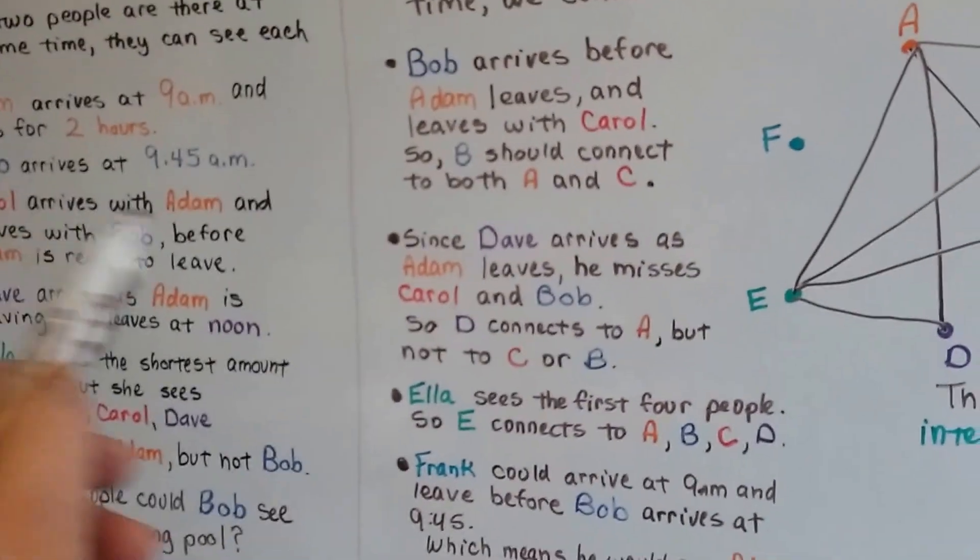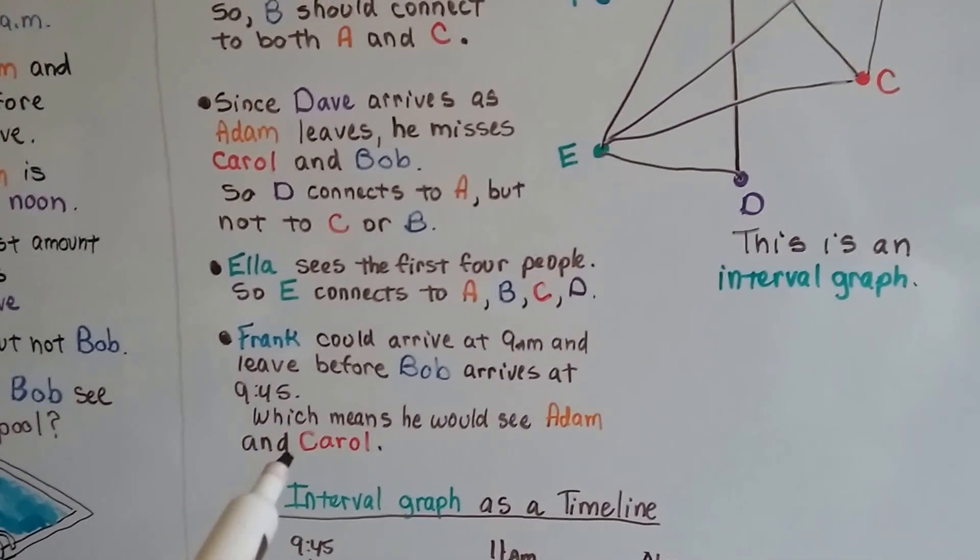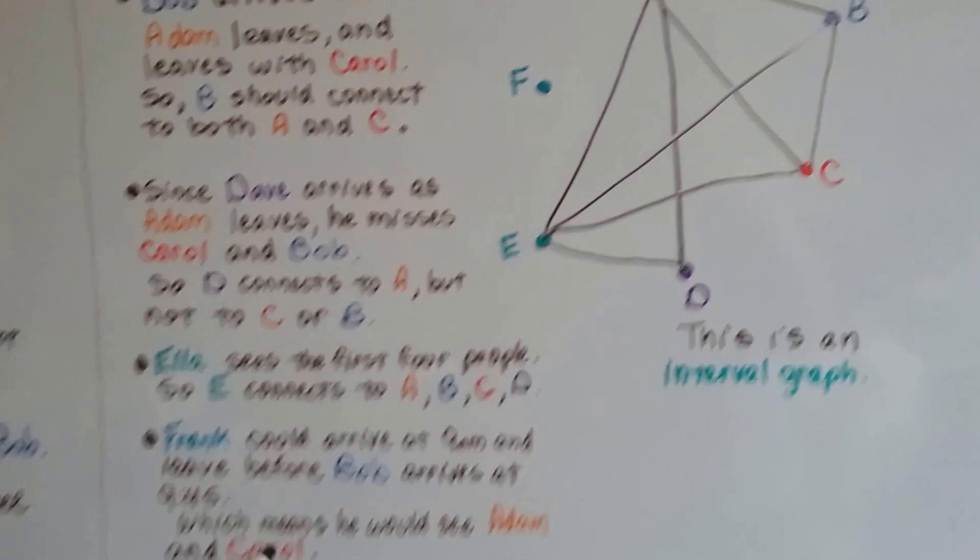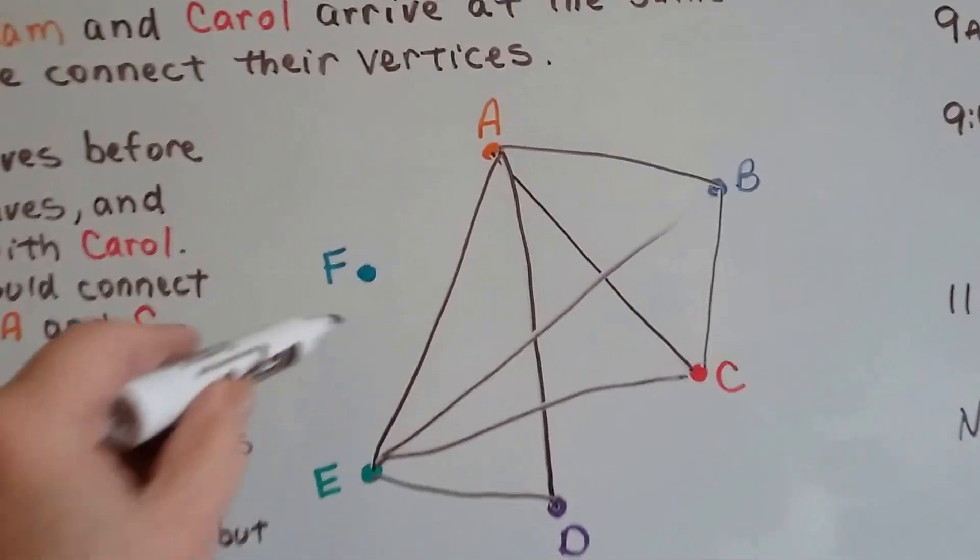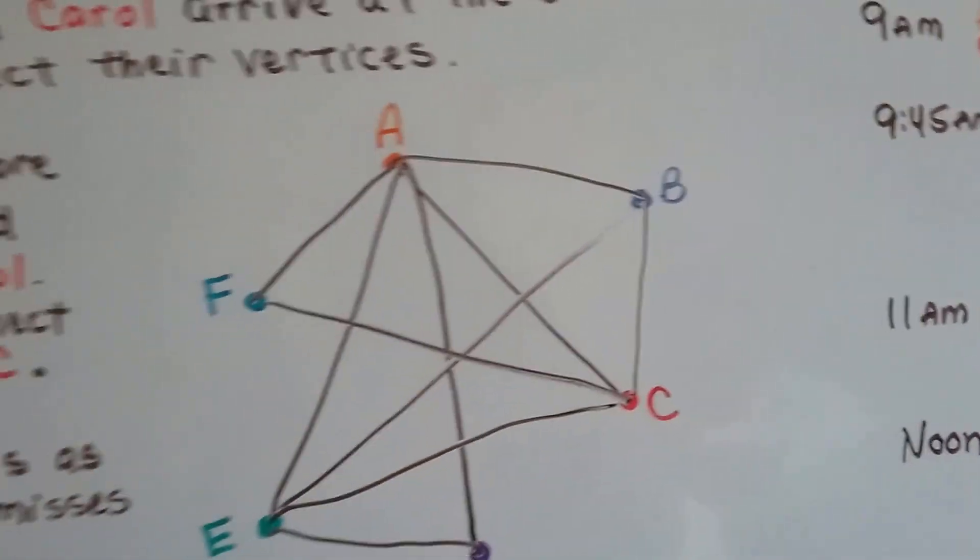Because Carol arrived with Adam, that means Frank is going to see Adam and Carol. So we're going to connect F to A and C.